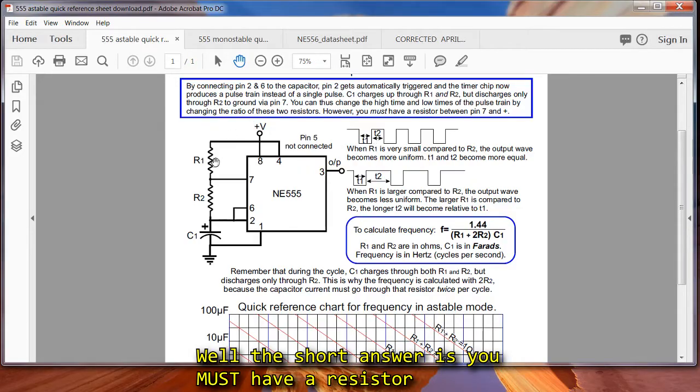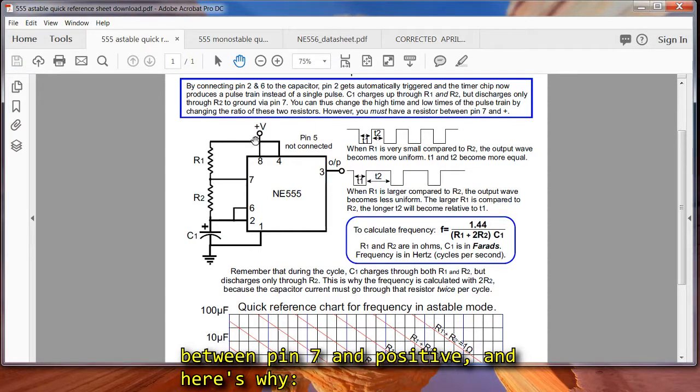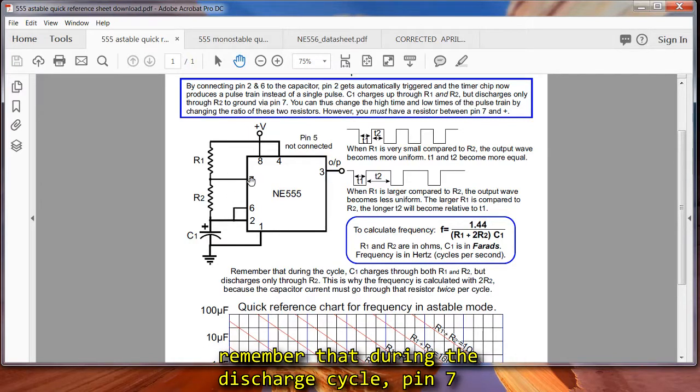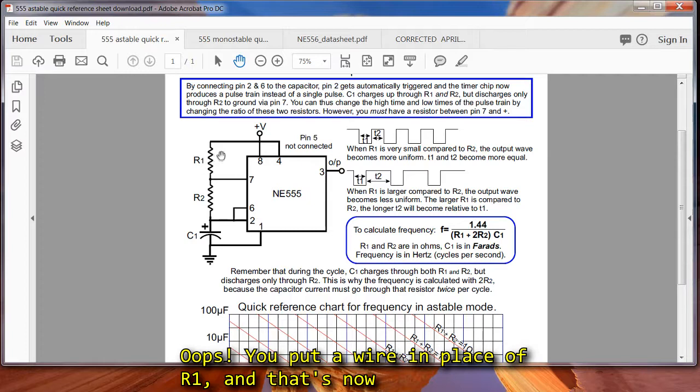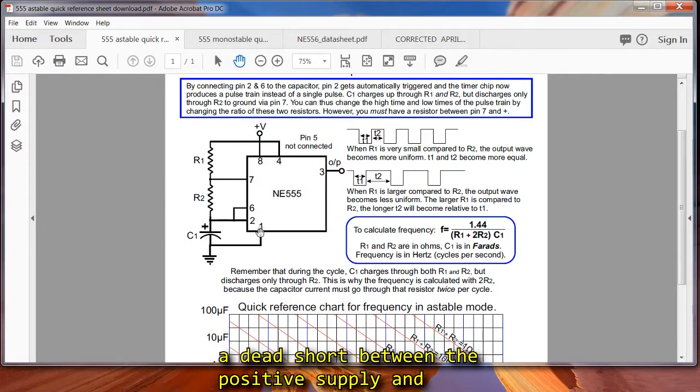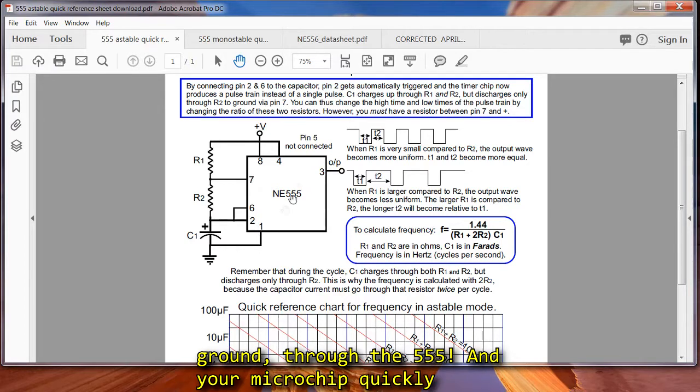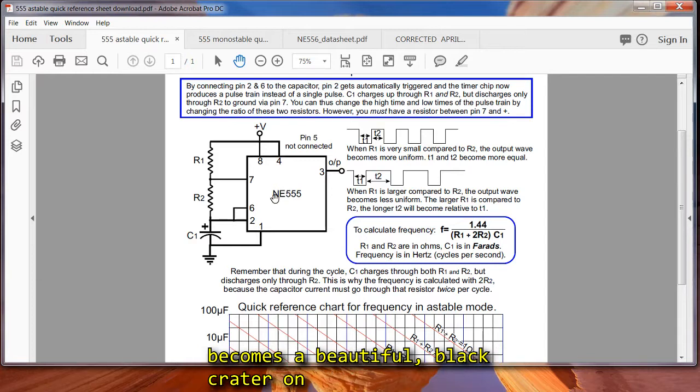The short answer is you MUST have a resistor between pin 7 and positive, and here's why. Remember that during the discharge cycle, pin 7 gets connected to ground through a transistor. Oops! You put a wire in place of R1, and that's now a dead short between positive supply and ground through your 555, and your microchip quickly becomes a beautiful black crater on your circuit board.